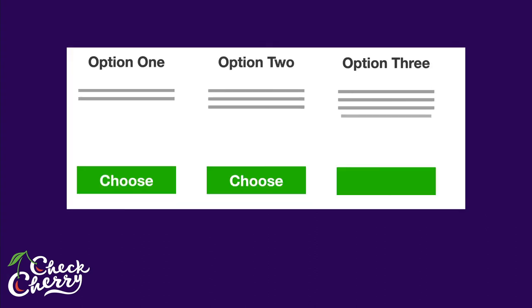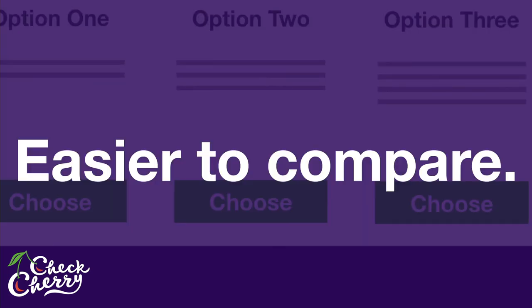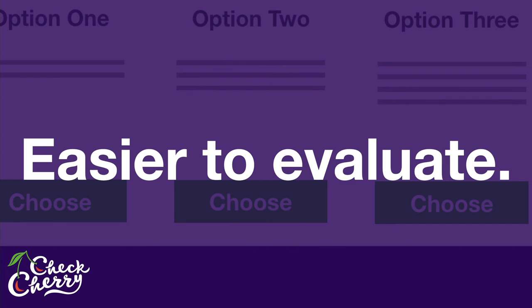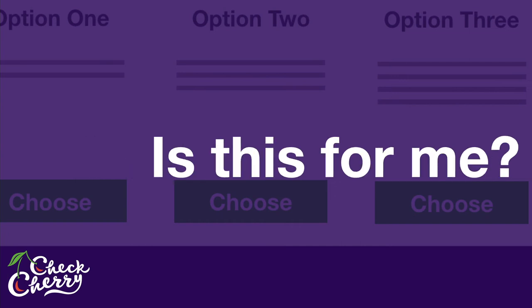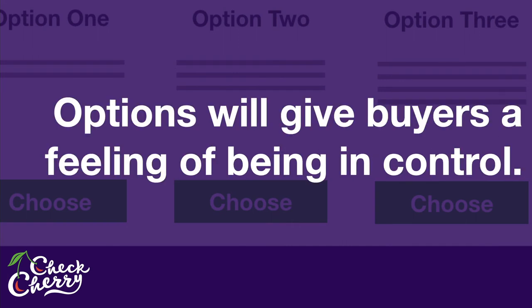Packages make buying easier. When a prospect visits your website and sees options one, two, and three with descriptions and pricing, they can compare within one provider instead of comparing between providers. They can answer 'Can I afford this? What's included? Is this for me?' Options give buyers a feeling of being in control, which makes the sales process smoother — we don't like to be sold, but we all like to buy.